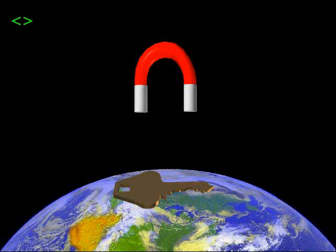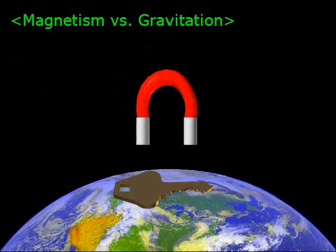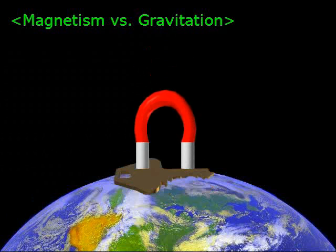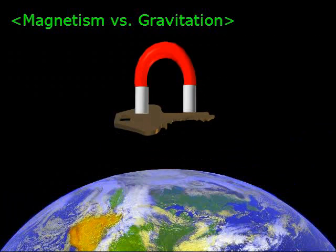Take for example the electromagnetic force, here represented by a magnet. It is not difficult for a small magnet to pick up a key from the surface of the earth, even though the combined gravitational force of the whole planet is pulling on the key.